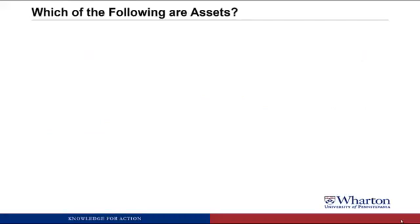Now we're going to practice applying these criteria to figure out which of the following items would be assets. I'm going to give you a number of items, and for each one I want you to try to figure out whether it's an asset or not. If it's an asset, try to give me the account name and the dollar amount. If it's not an asset, try to figure out what criteria would cause it to not be an asset. I'll bring up the pause sign so you can pause and try to answer it yourself, or you can just roll through and listen to the answers.